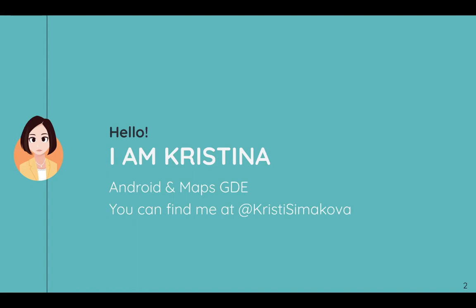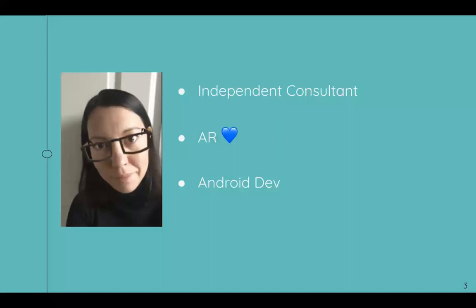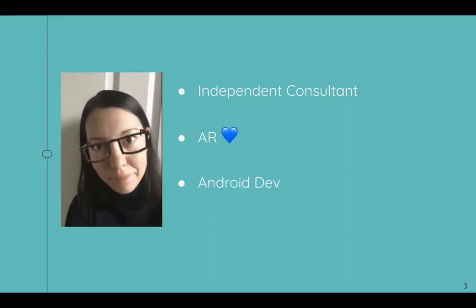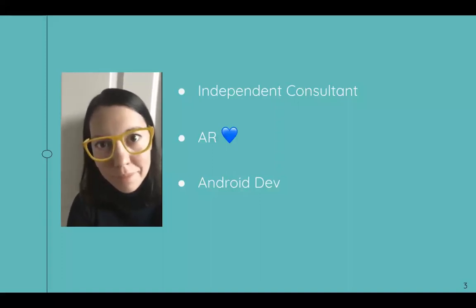I'm an Android and Maps 3D Google Developer Expert. I'm based in Oslo, but I was born in Russia. I've been an independent consultant for the last four years, mostly focusing on Android development, but I'm also a Unity developer. I really love AR — augmented reality. I blog about it and give talks about it. One of the reasons I'm here today talking about how you can use data to make game experiences is that it's connected to augmented reality, to maps, and to everything I'm excited about.